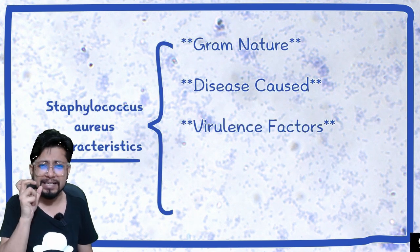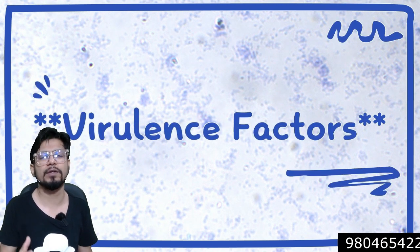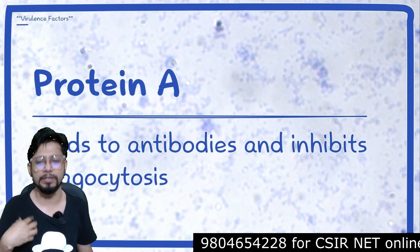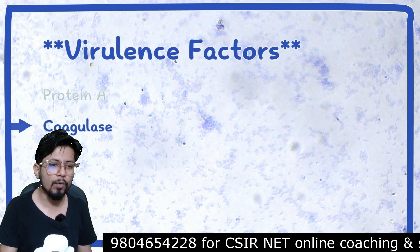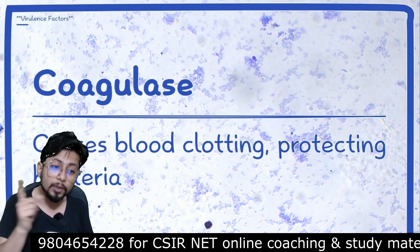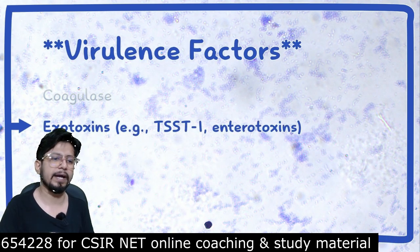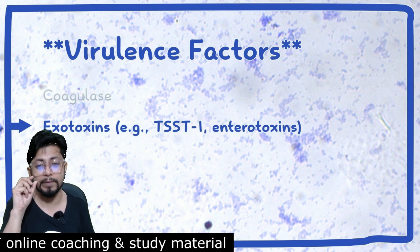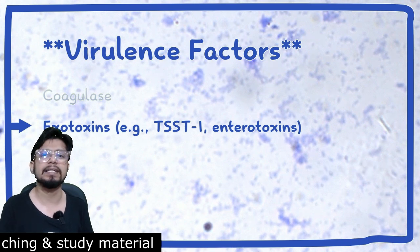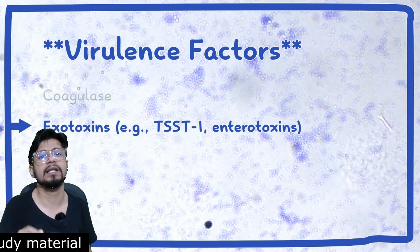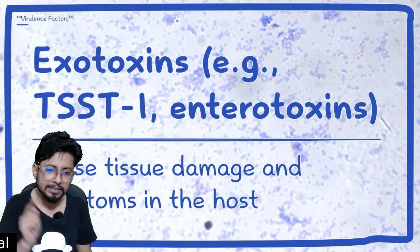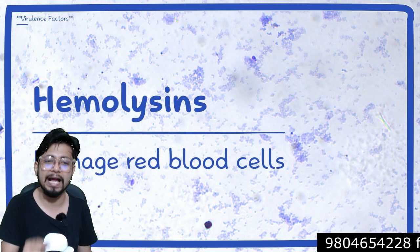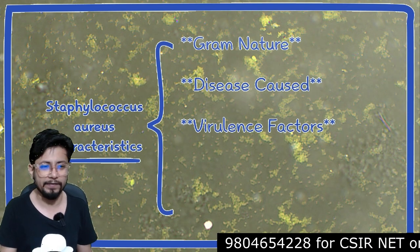It is one of the super dangerous bacteria. The virulence factors of Staphylococcus aureus include: primarily Protein A, which binds to antibodies of our immune defense and inhibits phagocytosis. The second is coagulase, which causes blood clotting, thus protecting the bacteria. Third are enterotoxins — for example, TSST-1 — which target our enteric tissues, particularly the intestinal lining epithelial cells, causing tissue damage and symptoms. Last are hemolysins, which can damage and destroy red blood cells.